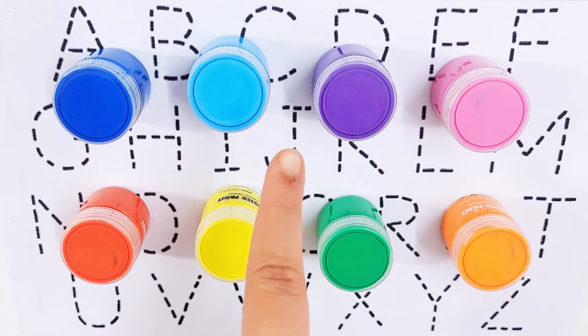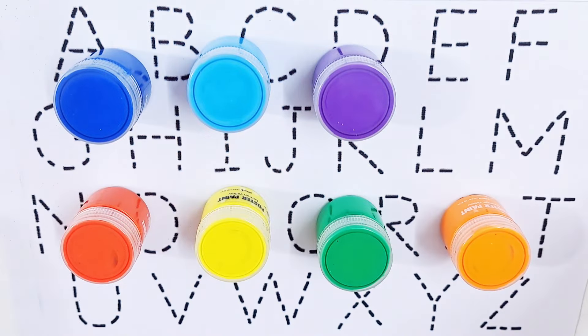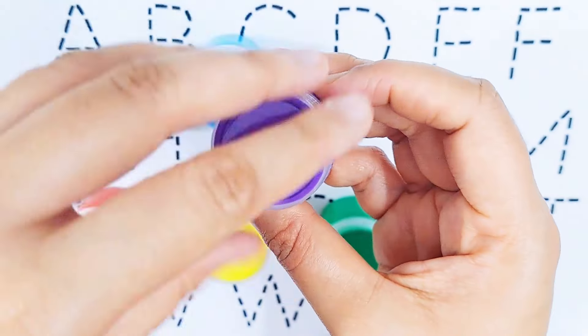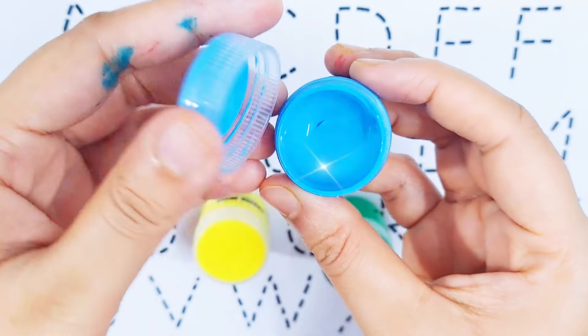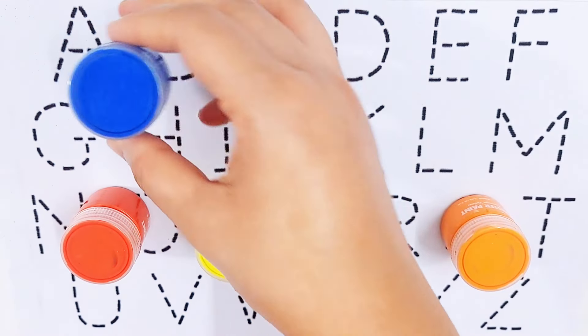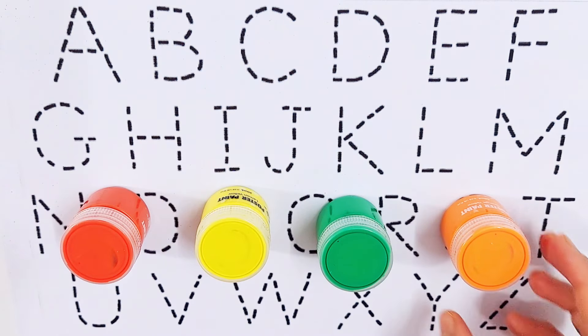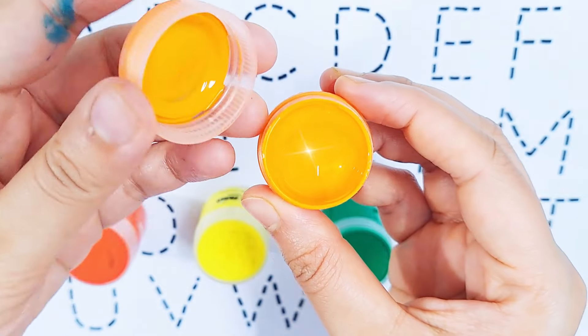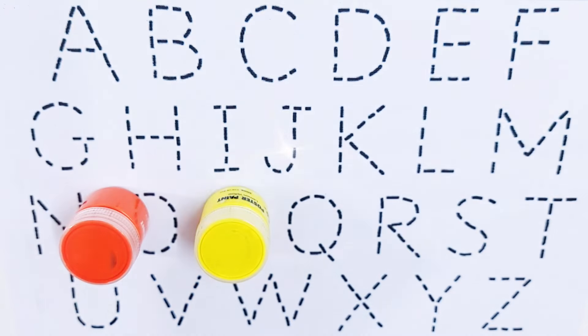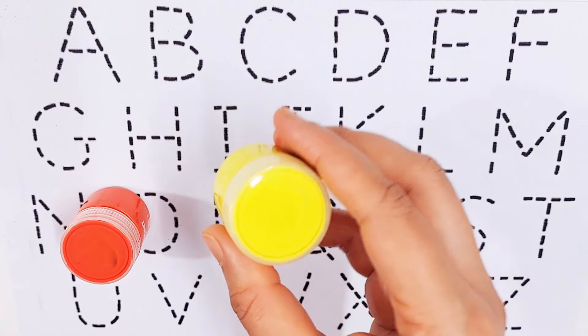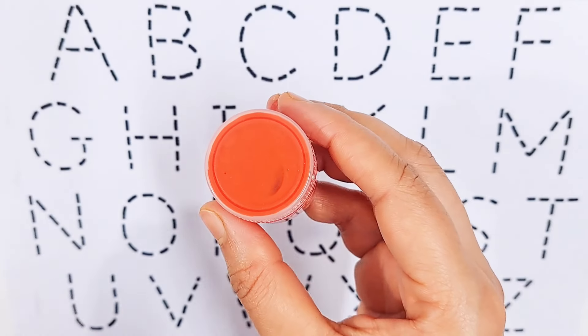Hello kids, let's learn some color names. Pink color, violet color, sky blue color, dark blue color, orange color, green color, yellow color, red color.